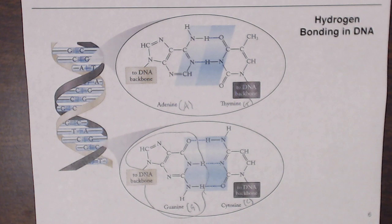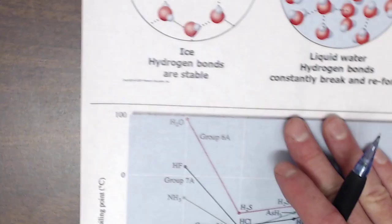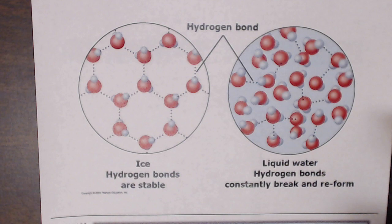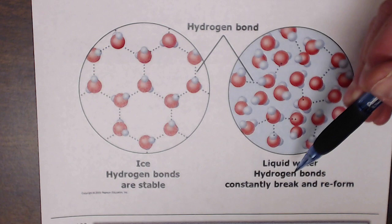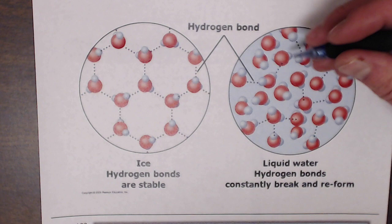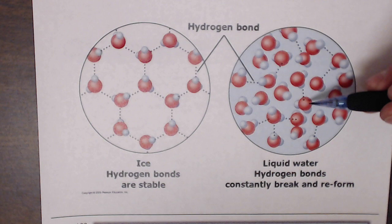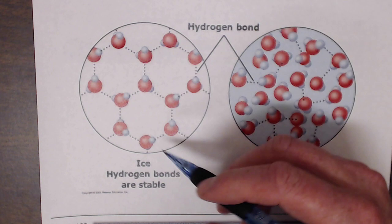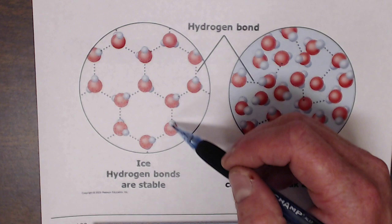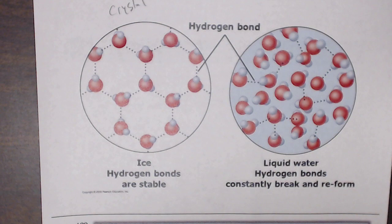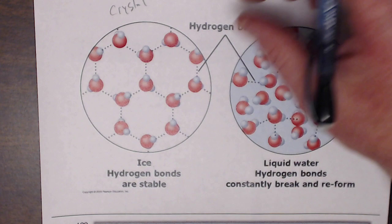Hydrogen bonding is also what keeps water together as a liquid. In liquid water, hydrogen bonds are constantly breaking and reforming chaotically. Because of water's tetrahedral geometry, it's easy for a water molecule to find a neighbor to hydrogen bond with — between hydrogens and neighboring oxygens. When water forms ice, it creates a regular crystal structure with a dendritic shape. If we zoom out from the single-molecule level, we see this structure repeating itself in an actual ice crystal.